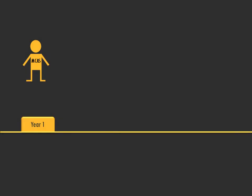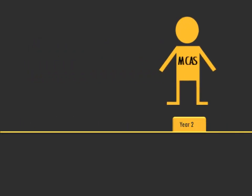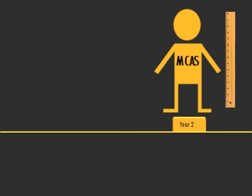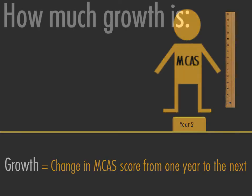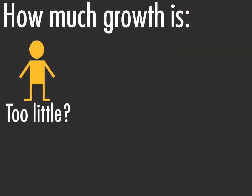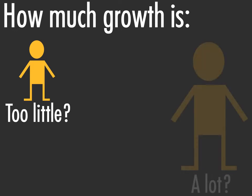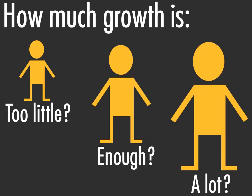The SGP measures growth by comparing a student's MCAS score from one year to the next. The purpose of the SGP is to determine whether the amount of growth is enough.